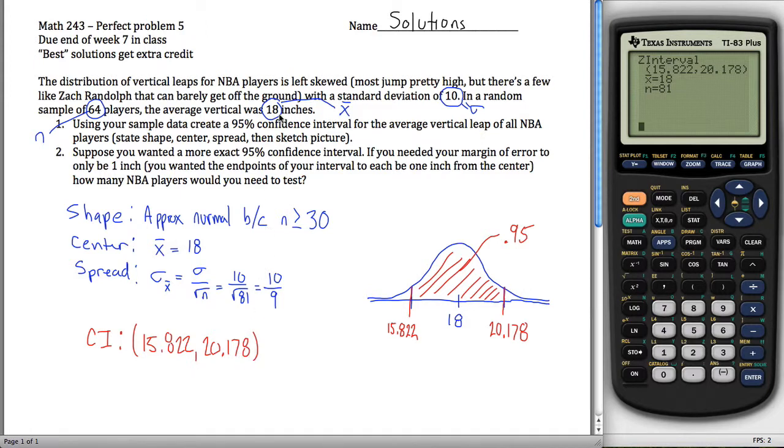These are low, 18 inches. Seems like NBA players could jump higher than that, but whatever, that's not the point. If this is true, this is our confidence interval. We're 95% sure that mu, the thing we don't know, is somewhere in here.